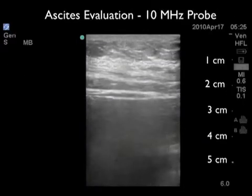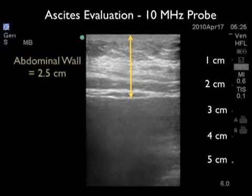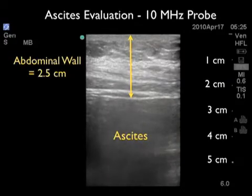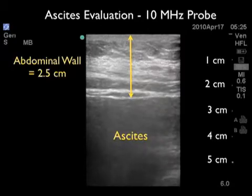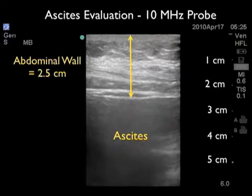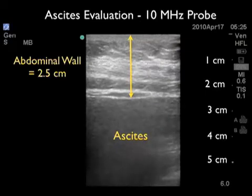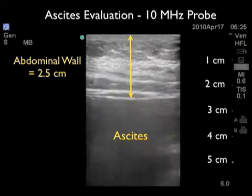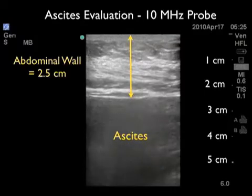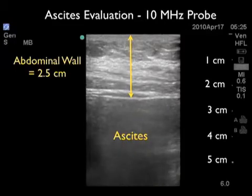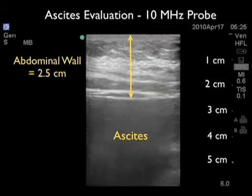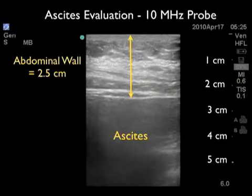In this video clip we've moved the probe slightly lateral from the last position in the same patient. Again we note the deep abdominal wall at 2.5 centimeters, indicating that a longer needle will be needed. But here we see a large collection of ascites and note the absence of gut sliding, denoting a larger pocket of ascites and a more favorable position for the paracentesis procedure. This is the position in which we perform the paracentesis using a longer lumbar puncture needle, and we're safely able to obtain ascites fluid for lab evaluation.